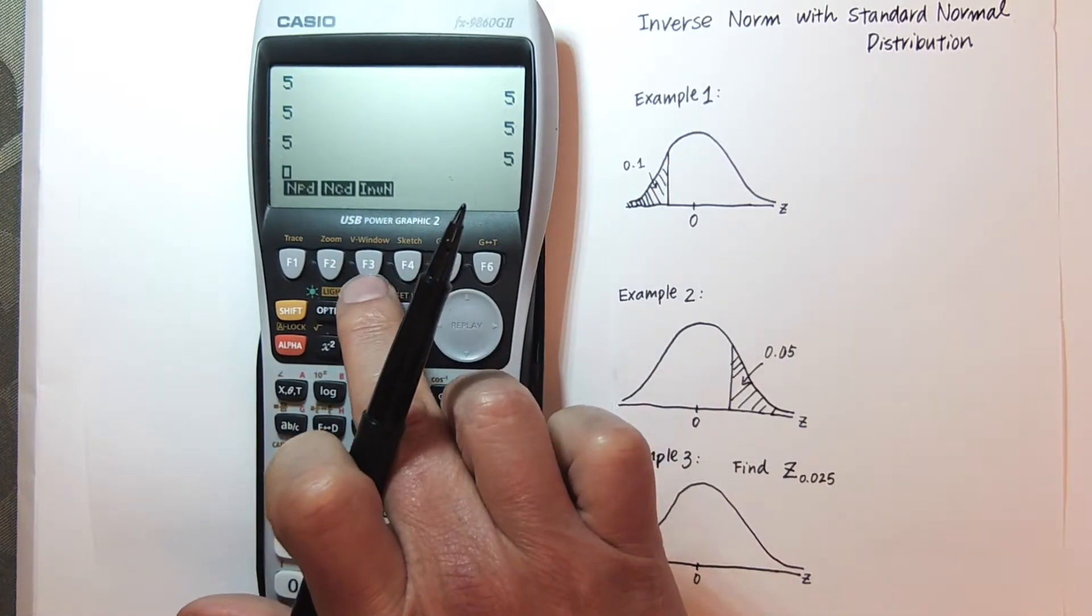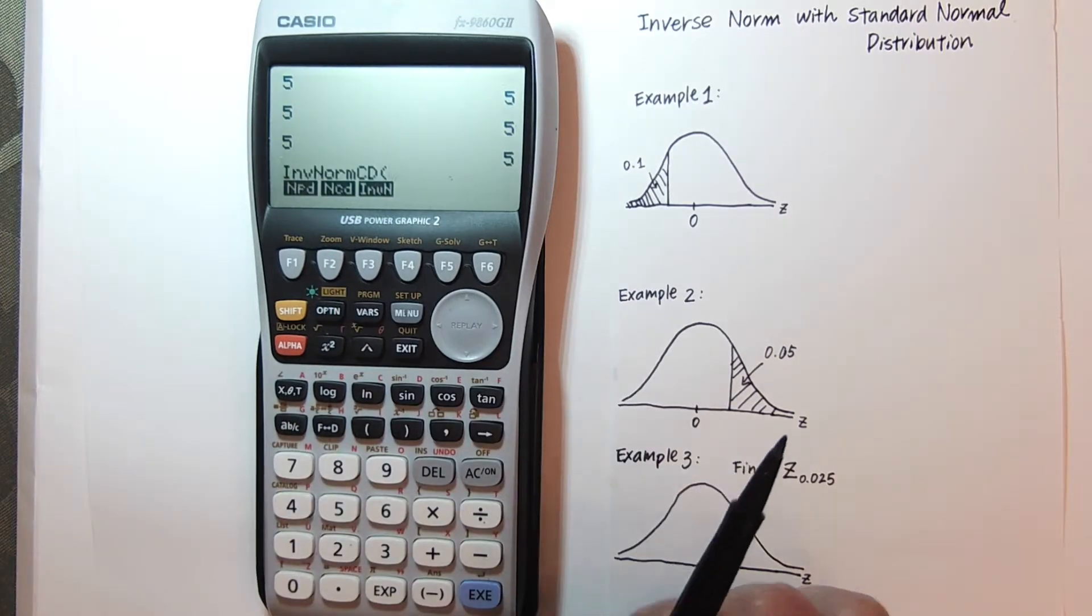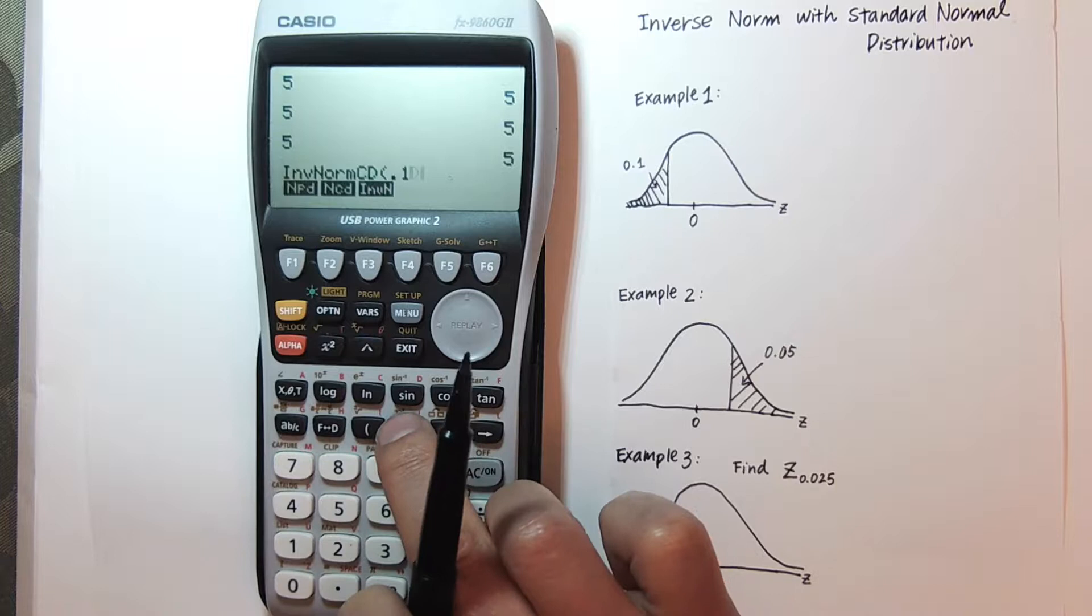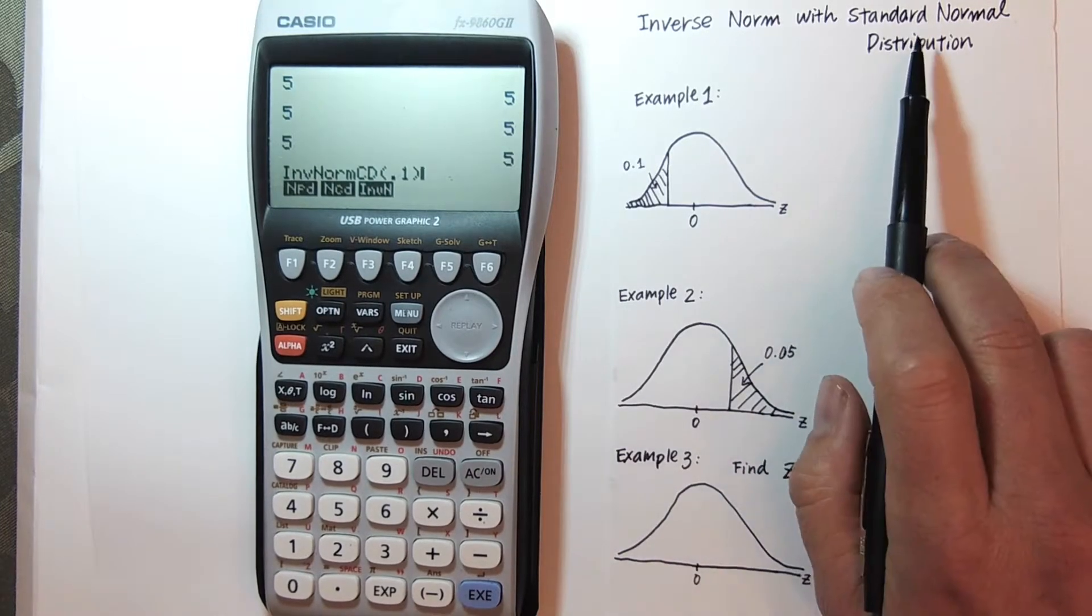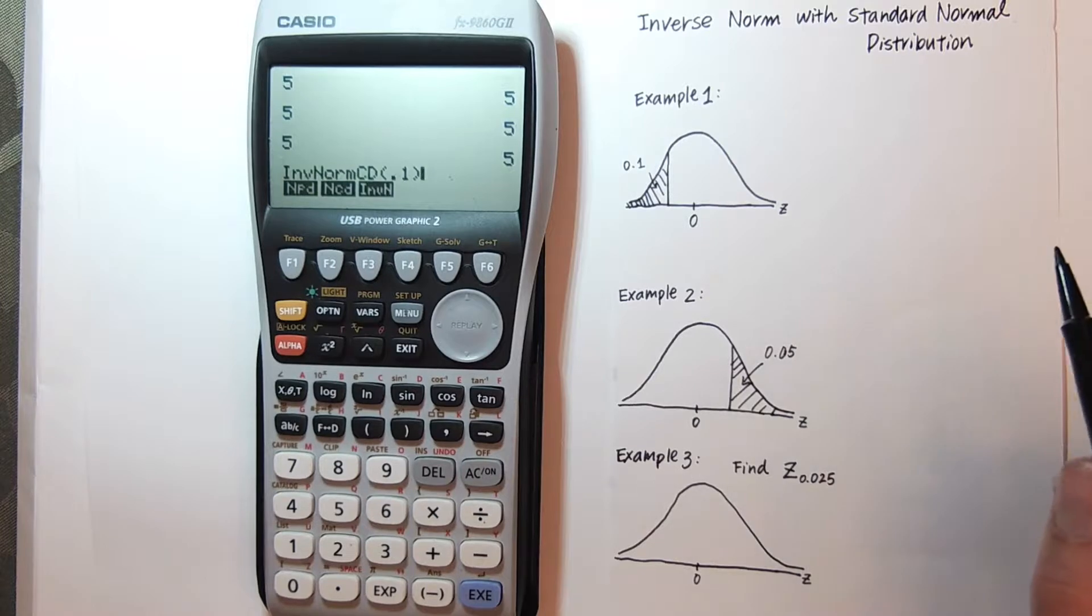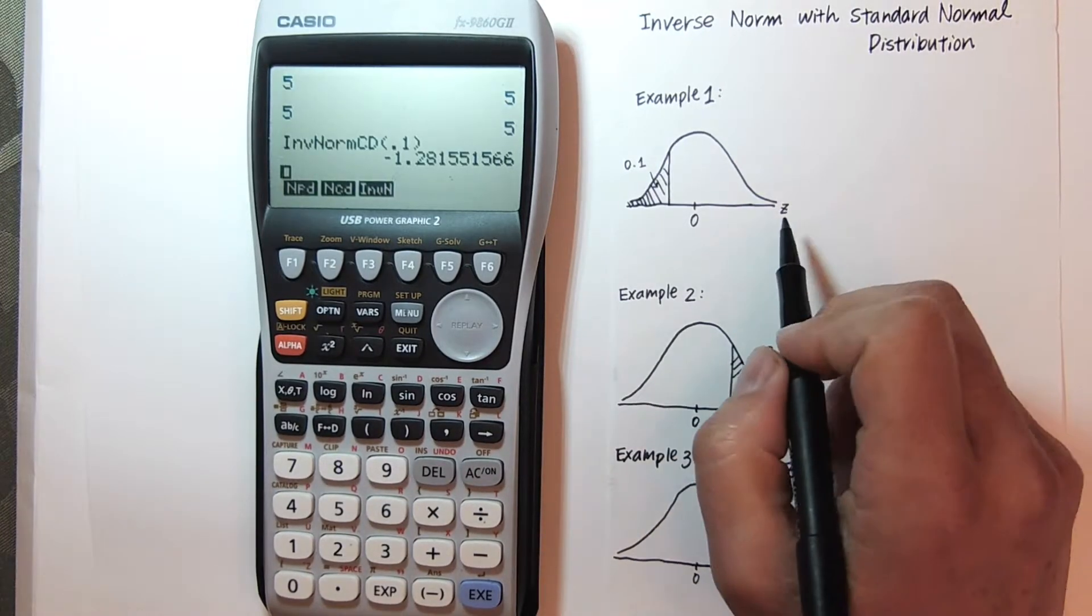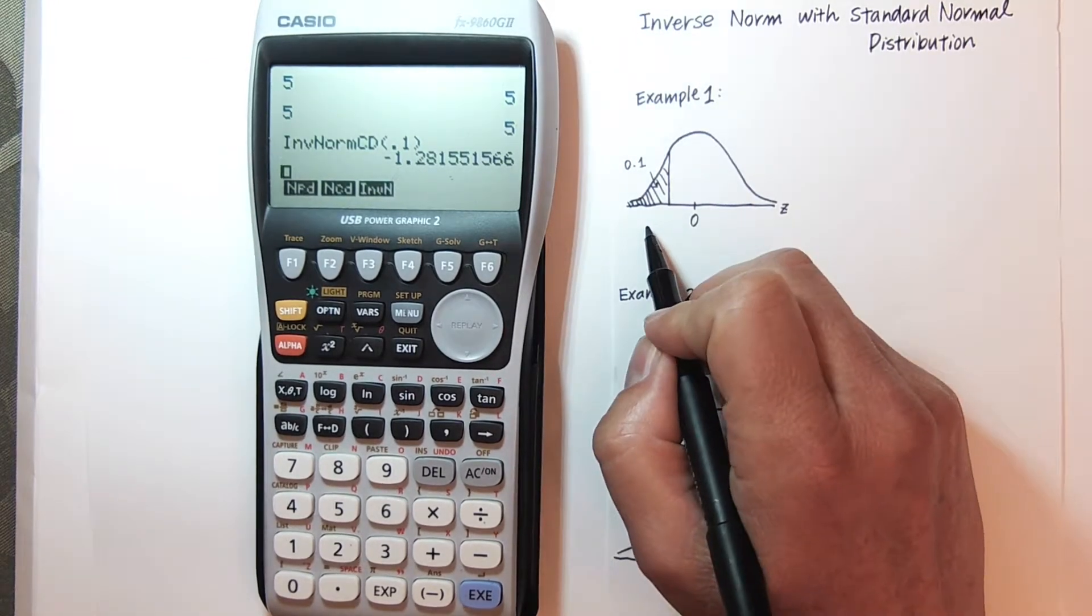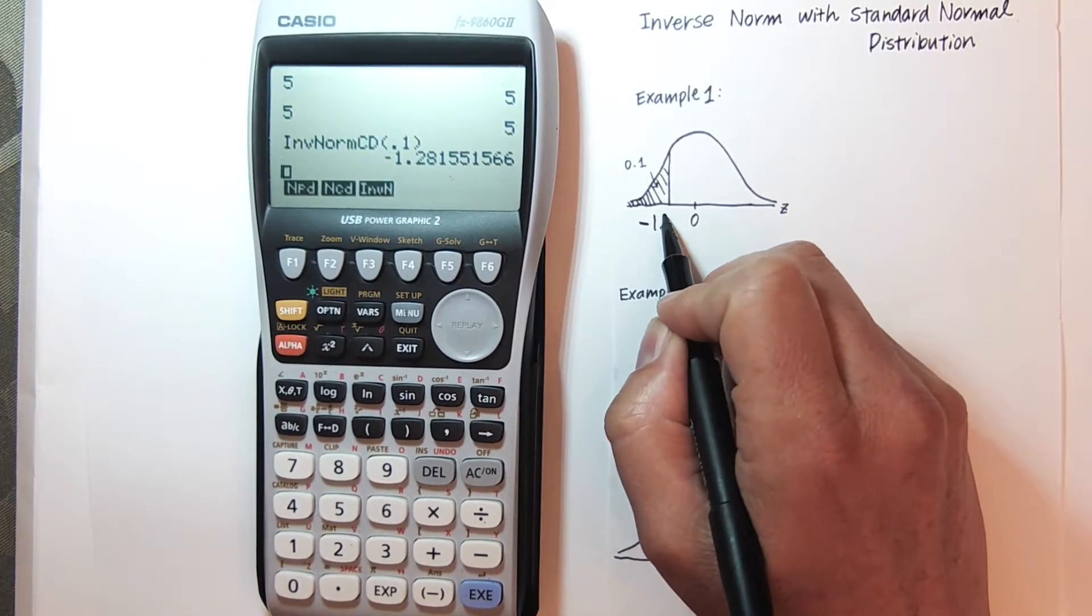So I'm going to hit inverse norm, which is F3. And the area to the left is 0.1. It's assumed to be the standard normal, so that means that the mean is 0 and the standard deviation is 1. When I hit execute, it gives me my Z score. You can see it's negative because it's less than 0. So negative 1.28.